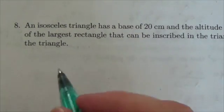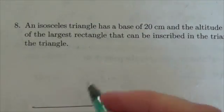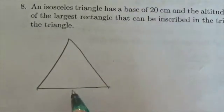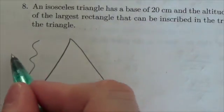Okay, so an isosceles triangle has a base of 20 centimeters. We'll just draw the base at 20, doesn't really matter, just kind of have a sketch here. The altitude is going to be 40. So here's our 20 centimeter base. This over here is going to be 40.